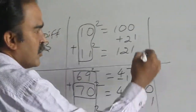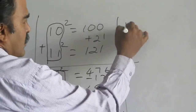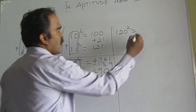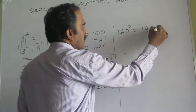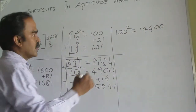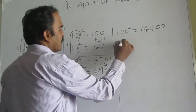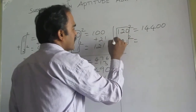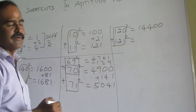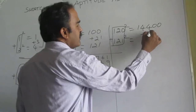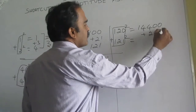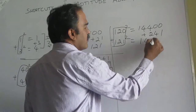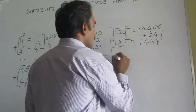Let us do one more. What is 120 square? 14400. So, what is 121 square? Just you add up 120 plus 121. The total is 241. So, 14400 plus 241 is 14641.